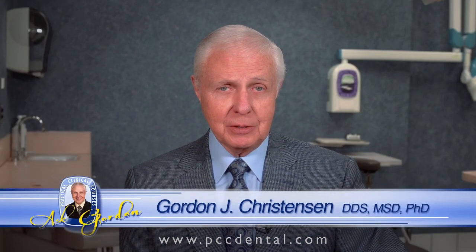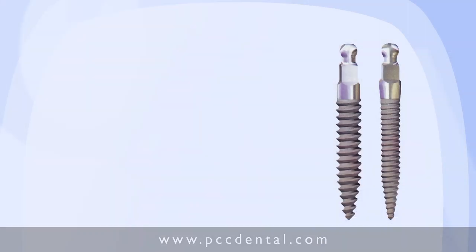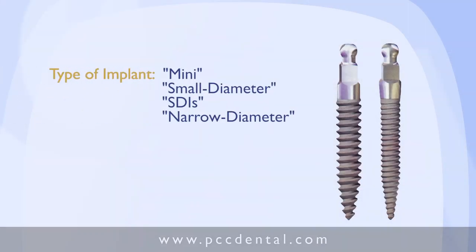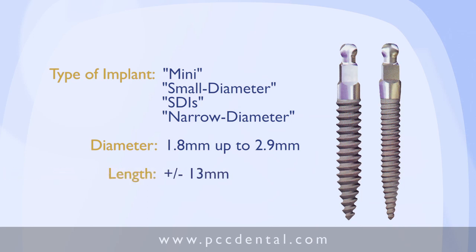What is a small diameter implant? Look at this graphic for just a moment. A mini, or small diameter, or SDI, or narrow diameter implant — it has numerous names — is an implant that is root-formed from about 1.8 millimeters up to 2.9 millimeters in diameter, with an average length of about 13 millimeters. That's the most popular size that's sold, and it usually has screw-like characteristics.